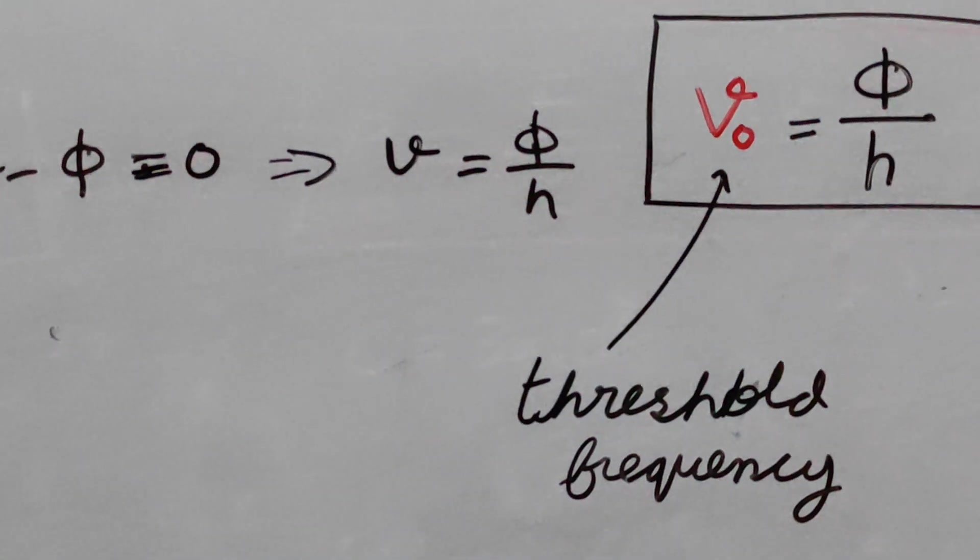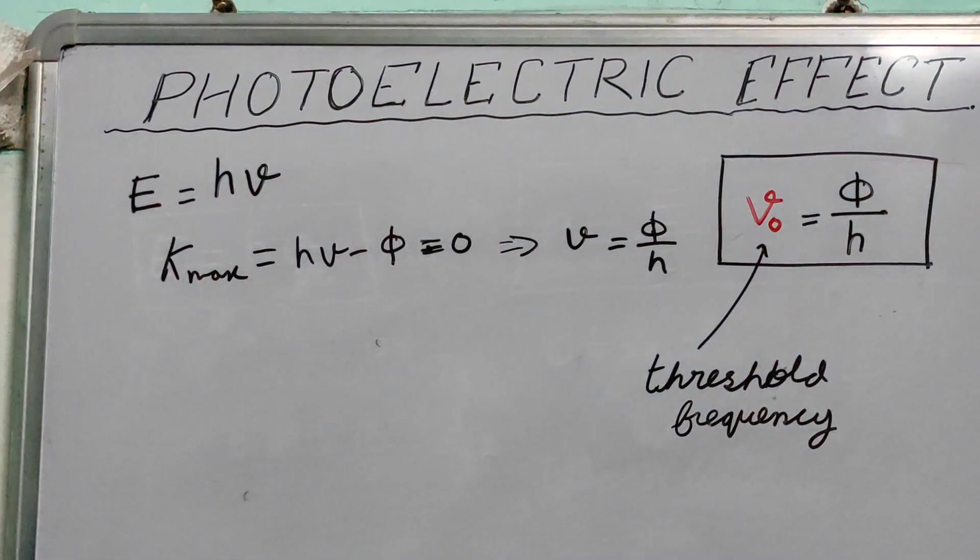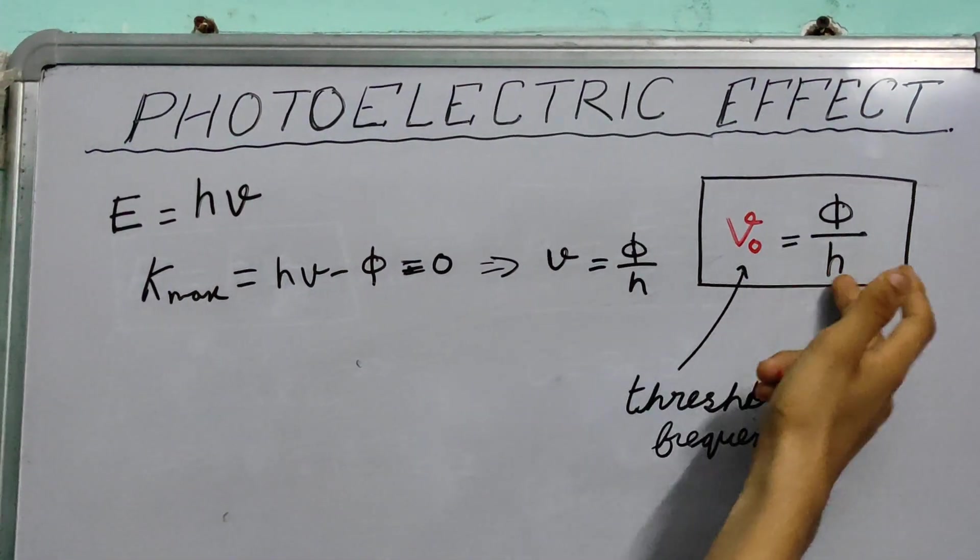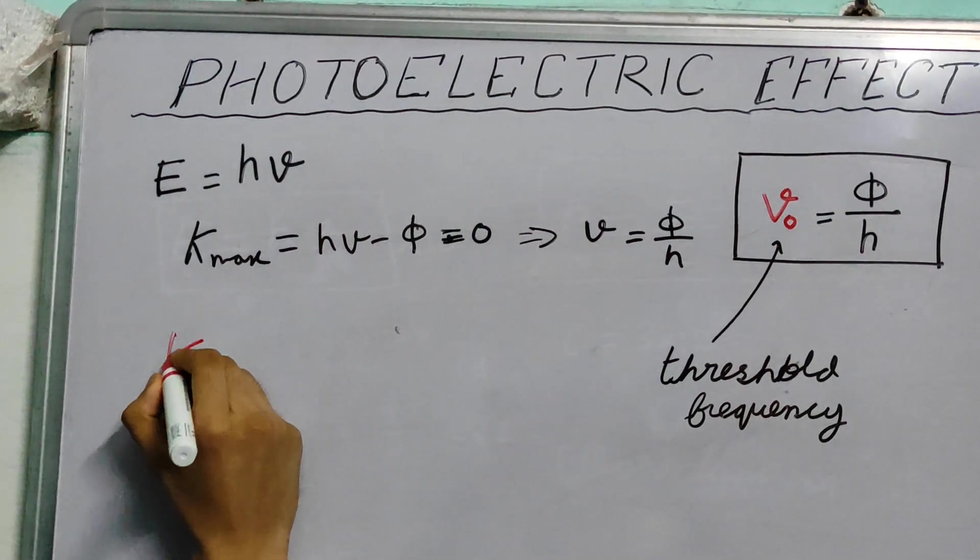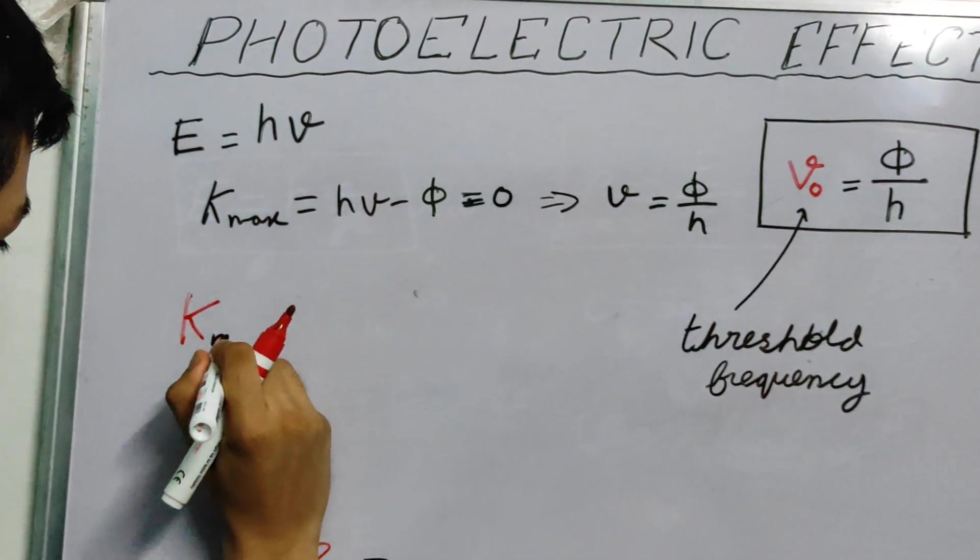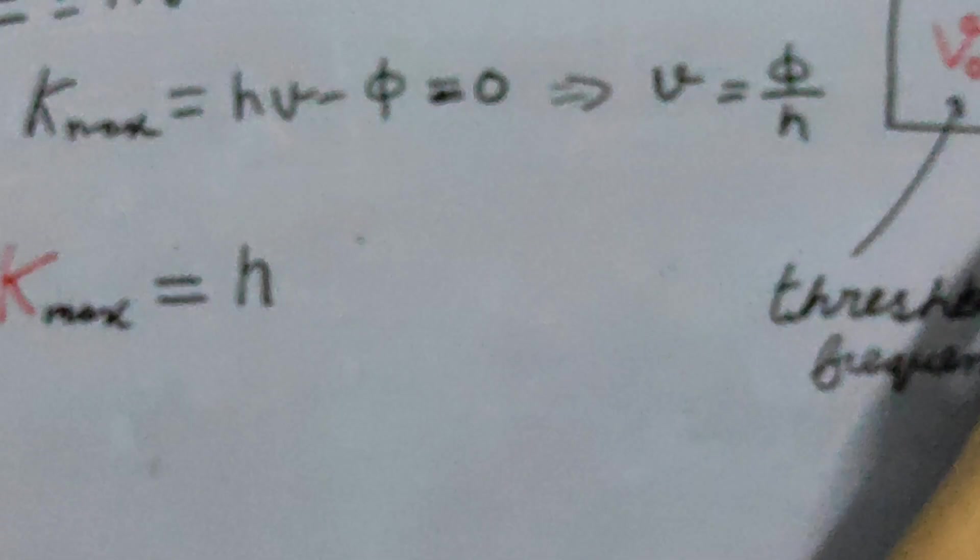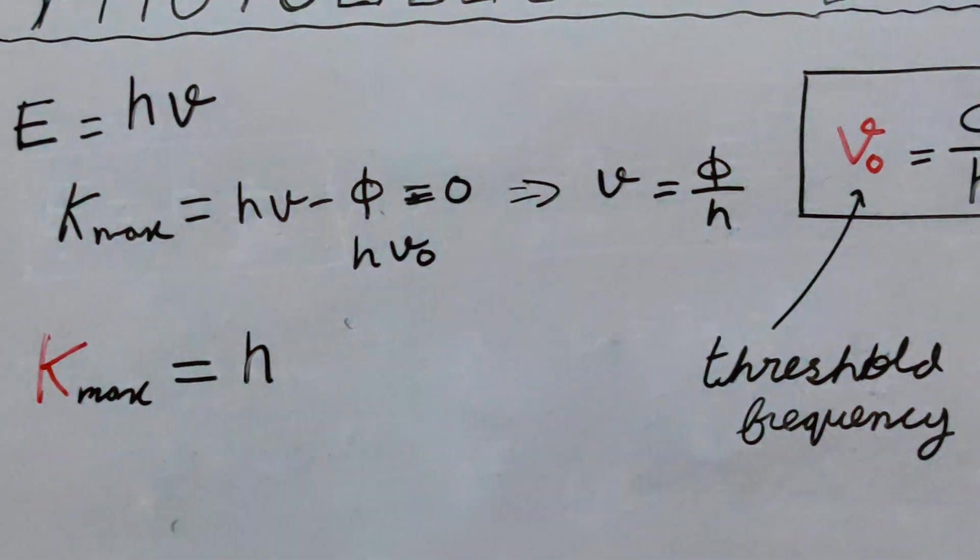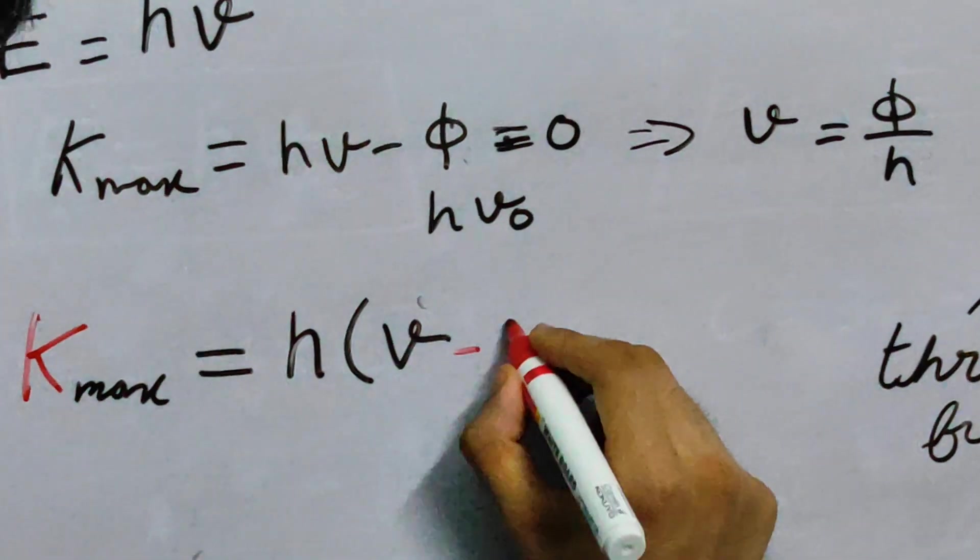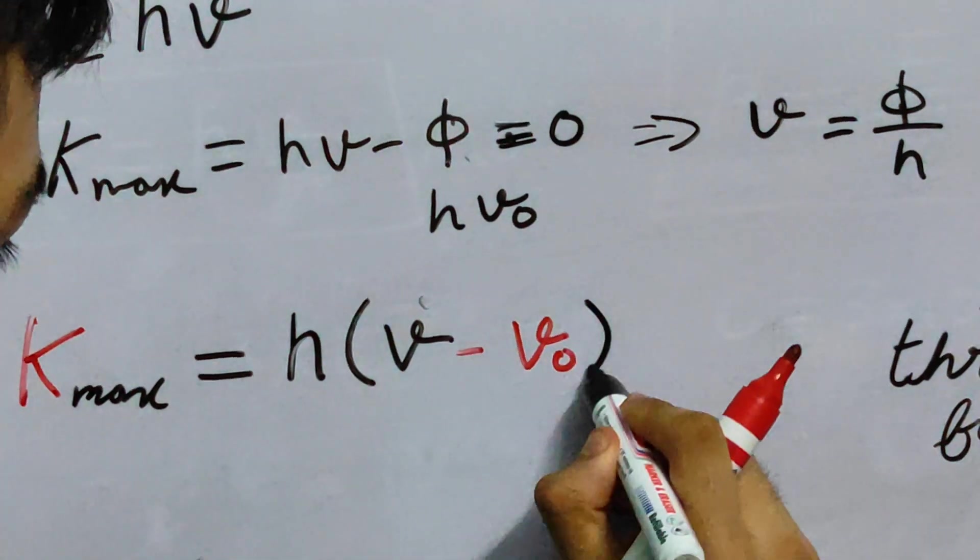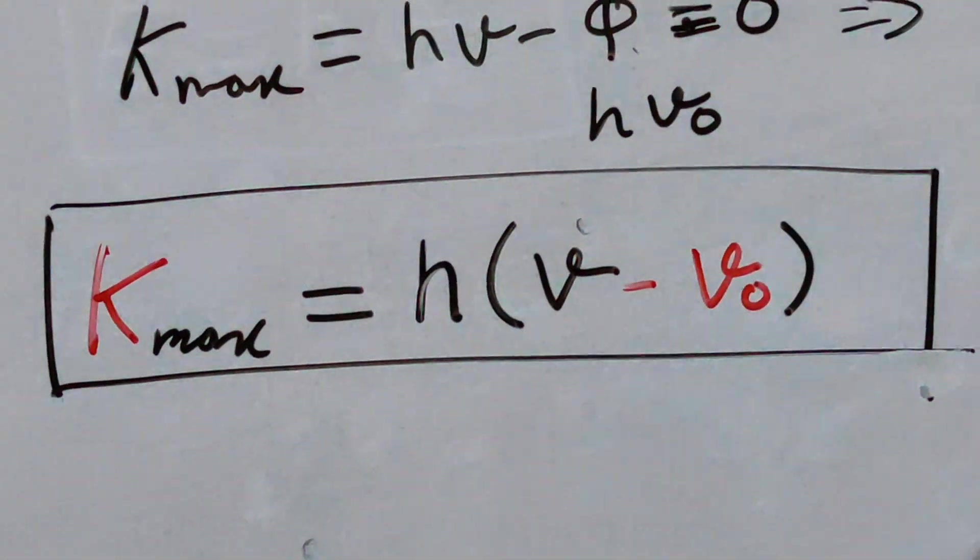And nu0 is threshold frequency. For convenience, let us write our maximum kinetic energy in terms of nu0. From this, you get phi is equal to nu0 h. So, we write our k max, is h. If you write phi as h nu0 there, you can factor out the h. So, h nu, the frequency, minus nu0. This, this is our Einstein's equation in terms of our threshold frequency.